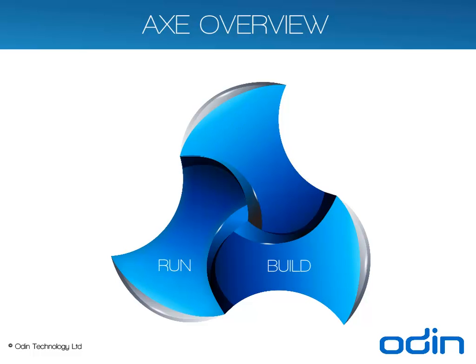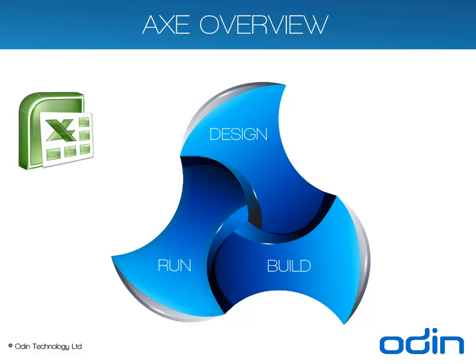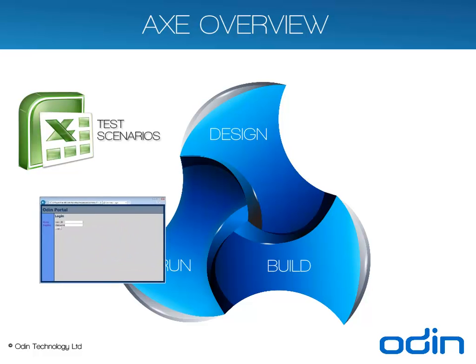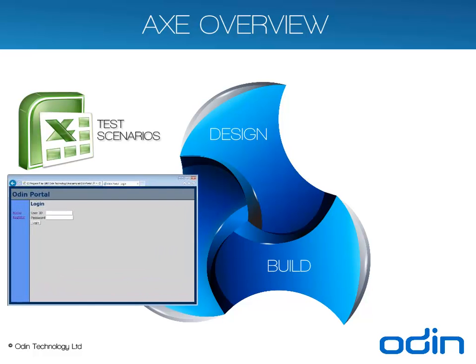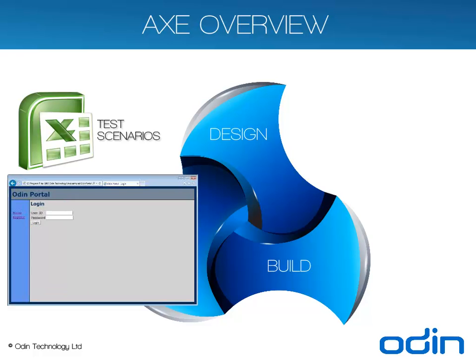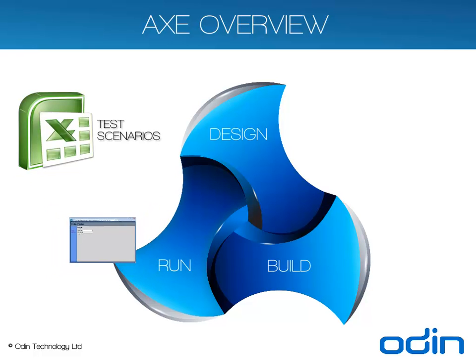In the Design phase, testers use Microsoft Excel as the primary tool for designing test scenarios for the system that's under test. The test scenarios designed during this phase will reference objects and actions in the system under test, as defined by the underlying automation tool that is being used.